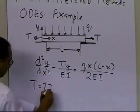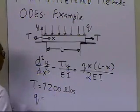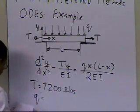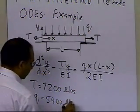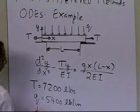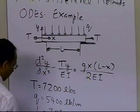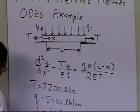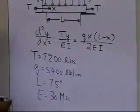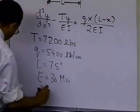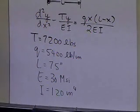So let's suppose T, the amount of tension being applied, is 7200 pounds. The uniform load being applied is 5400 pounds per inch. The length of the specimen is 75 inches. E, which is the Young's modulus, is given as 30 MSI, which is 30 times 10 to the power 6 PSI. And I, which is the second moment of area — please don't call it moment of inertia — the second moment of area is 120 inches raised to the power 4.